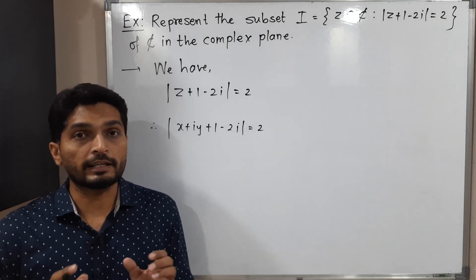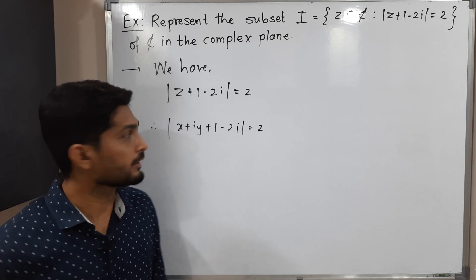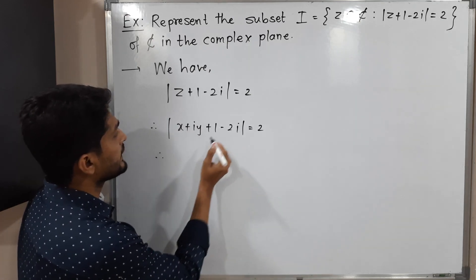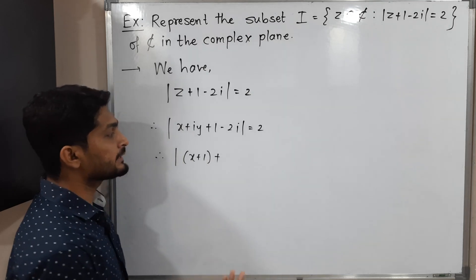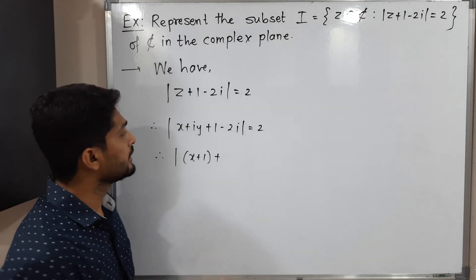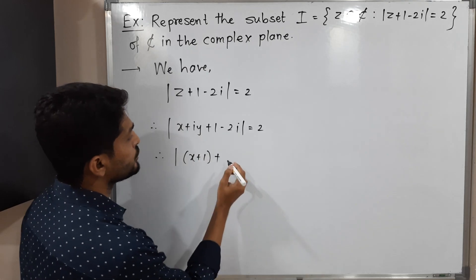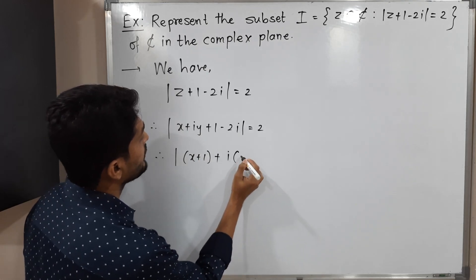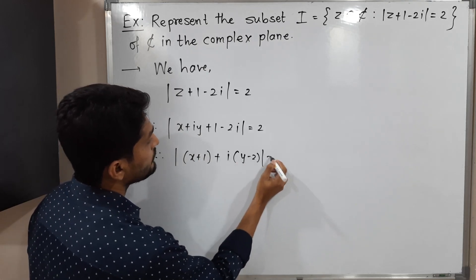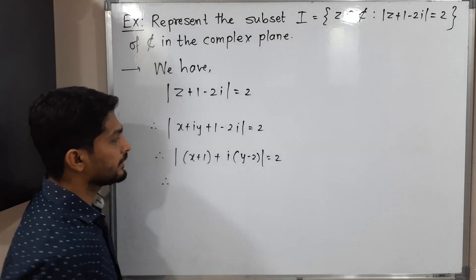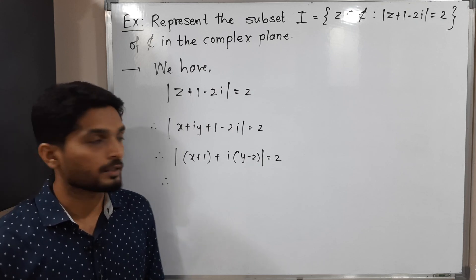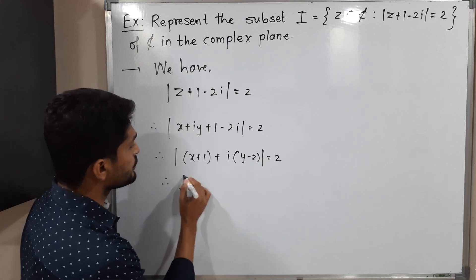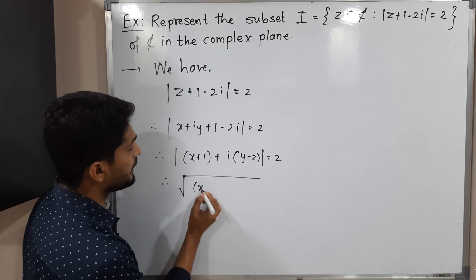The real part is x and 1, so let me collect them: x + 1. And imaginary part, that means terms having i: iy - 2i, so let me take i common: y - 2. So let us take the value mod of this complex number. You are familiar with the definition of mod: square root of (square of real part plus square of imaginary part) = 2.